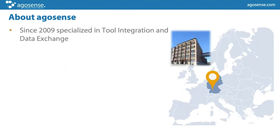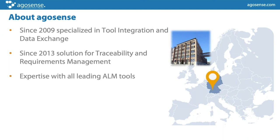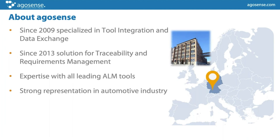A little bit about AgroSense: we founded the company in 2009, specializing in tool integration and automated data exchange. From the beginning this was our main focus, and this has not changed — even though we decided a few years ago to spread our product portfolio a little bit, offering a solution for requirements management and traceability. Very important for our customers has always been that all of our employees have a strong expertise with all the leading ALM tools.